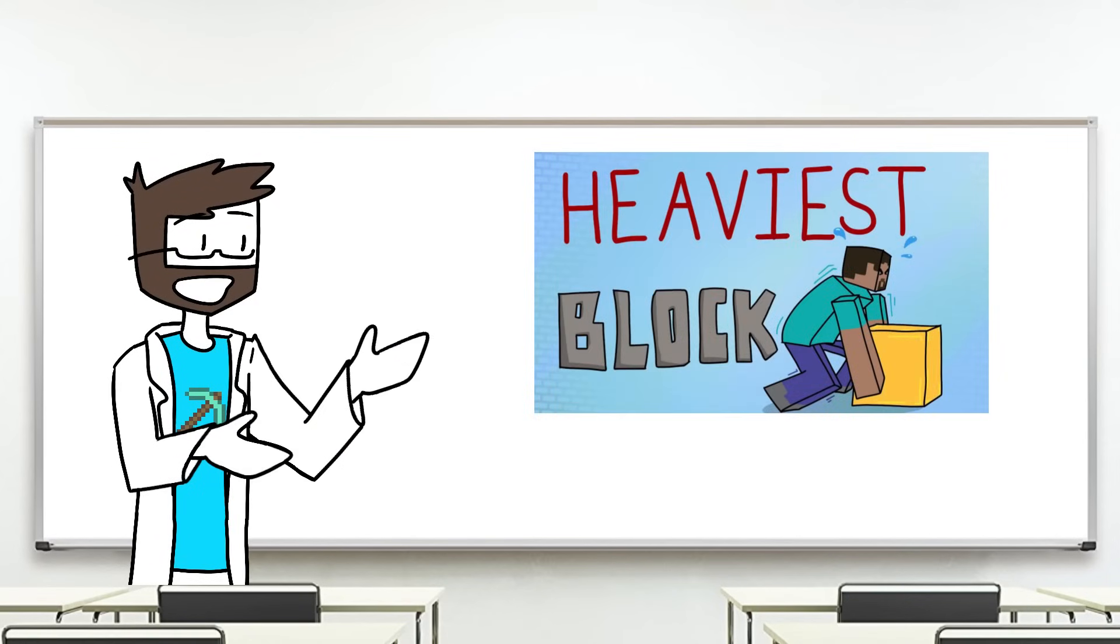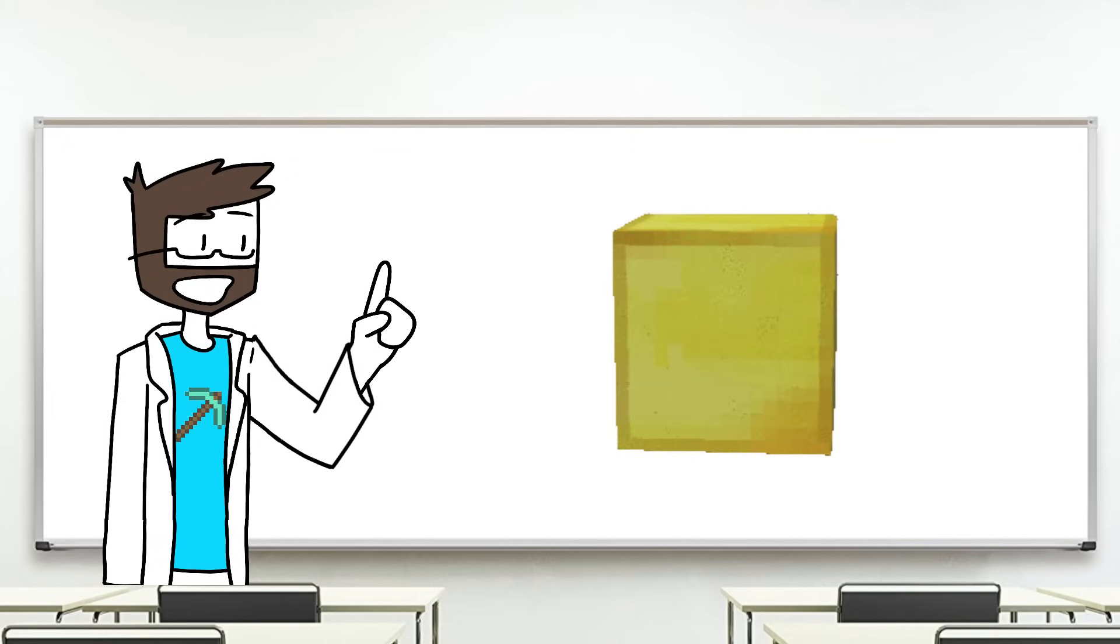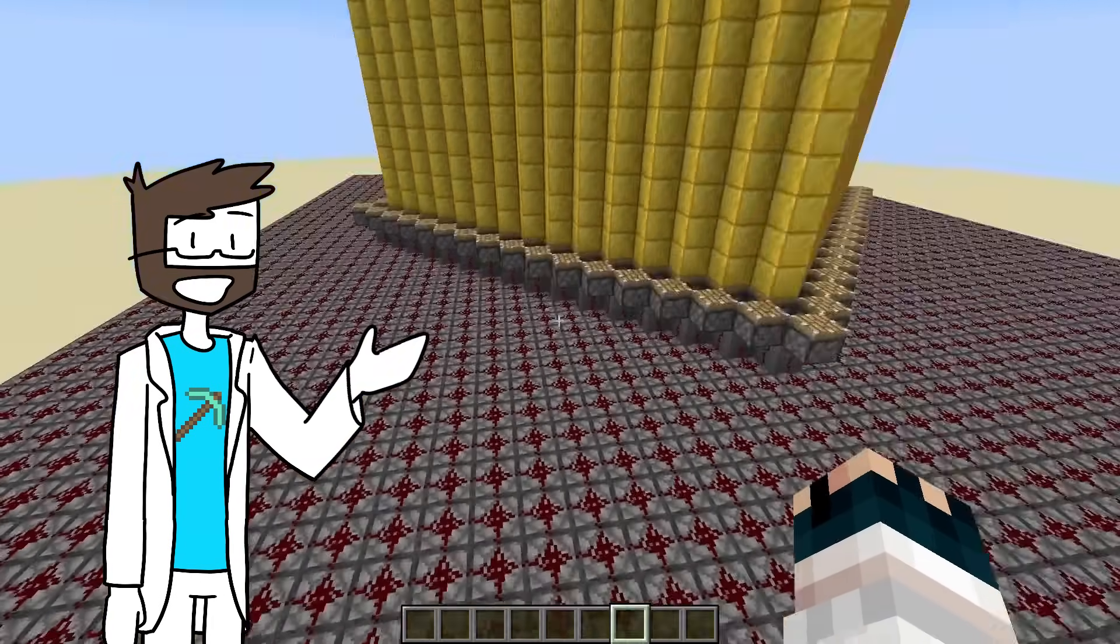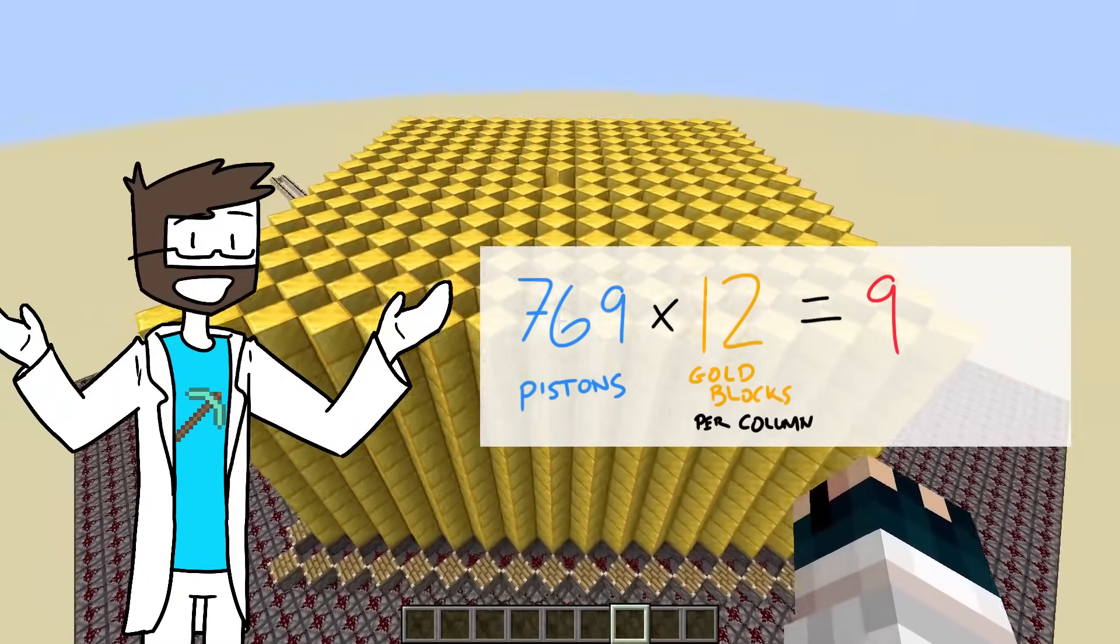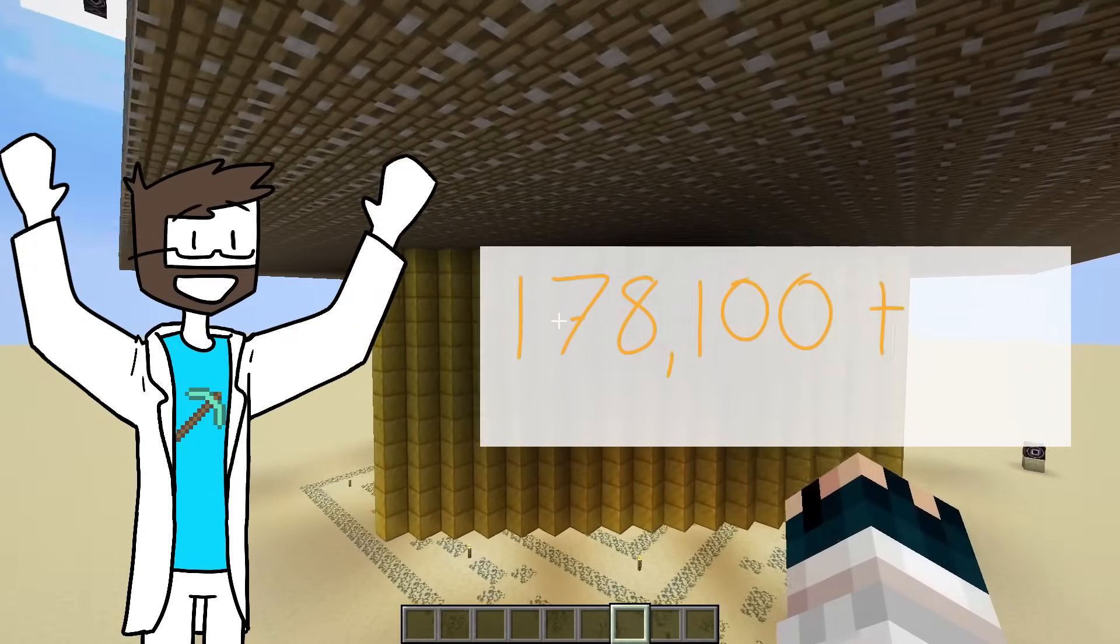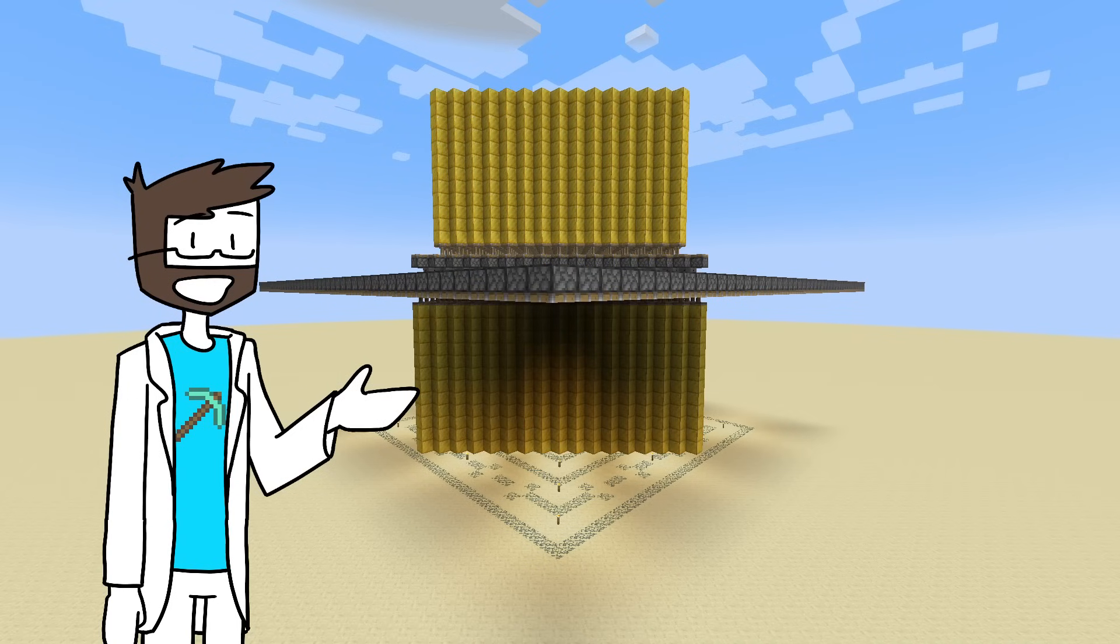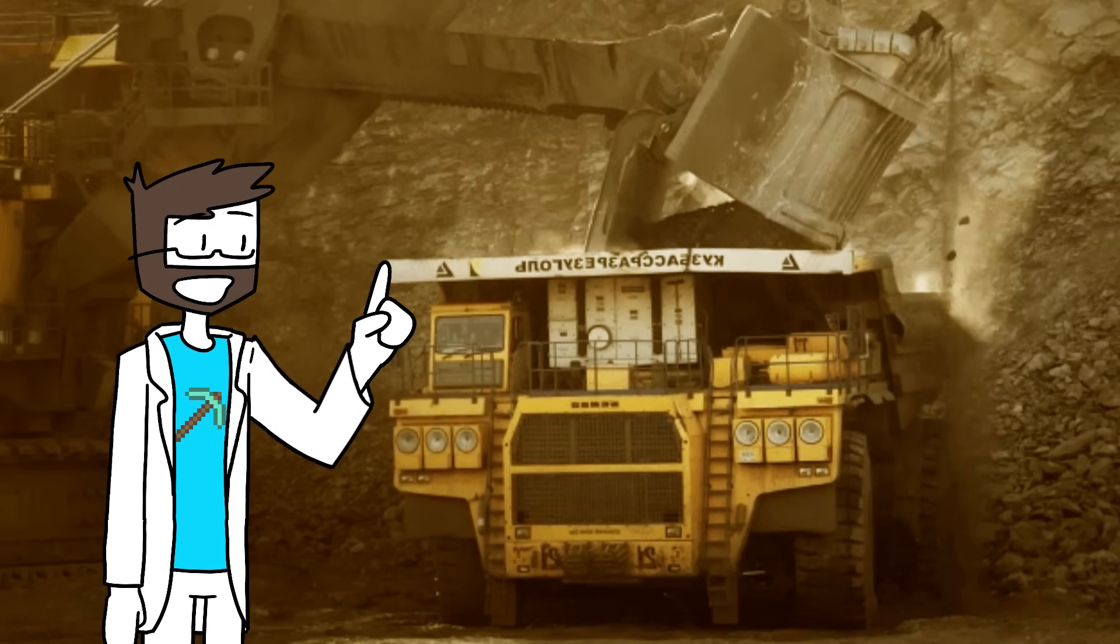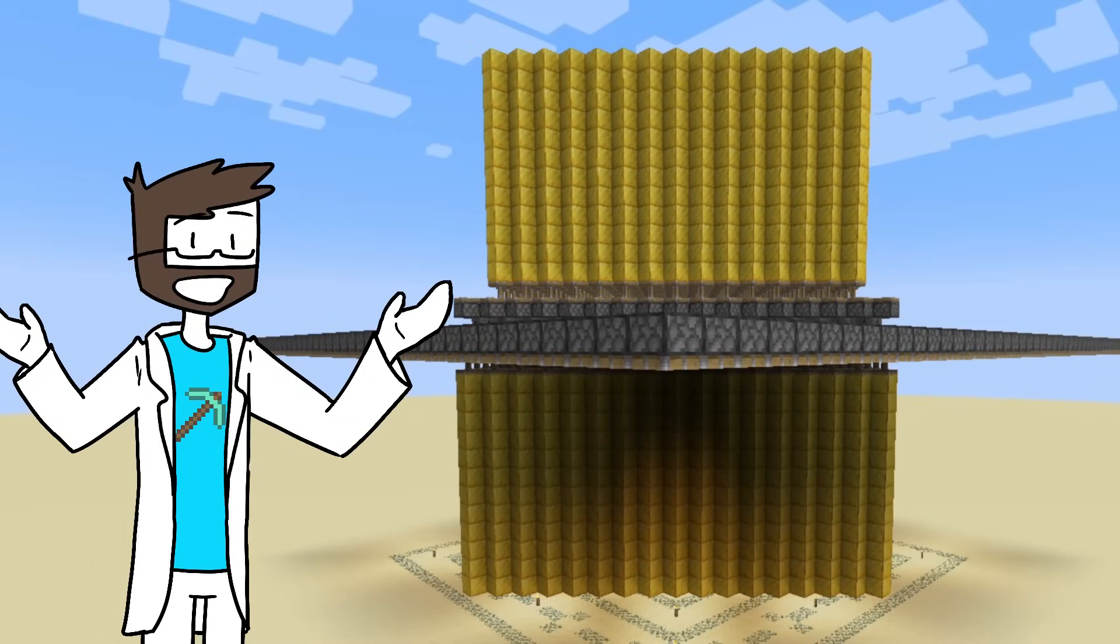Now, we've previously talked about how a gold block is the heaviest real world equivalent material. So, we'll use this as our movable block. Ignoring gravity, this setup here is able to move 769 rows of 12 blocks for a total of 9,228 blocks of gold, weighing a total of 178,000 metric tons. That's 53% the mass of the Empire State Building, and actually 20% more gold than has ever been mined. And it's able to move all of these blocks in a tenth of a second.